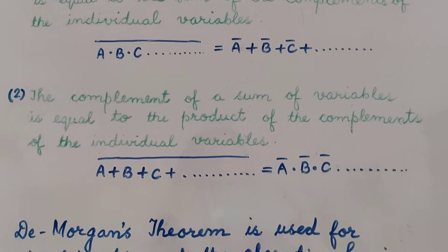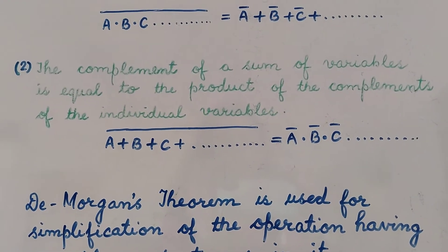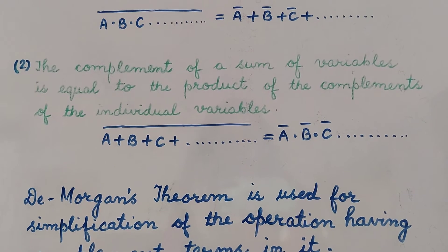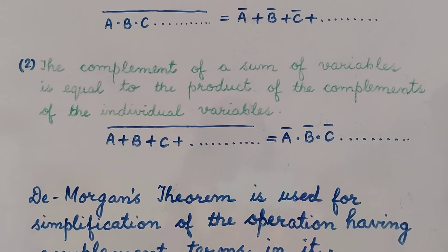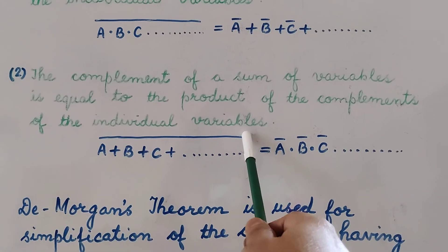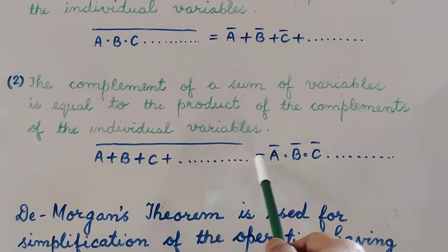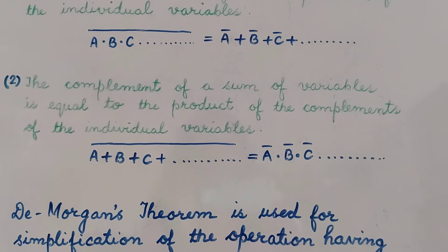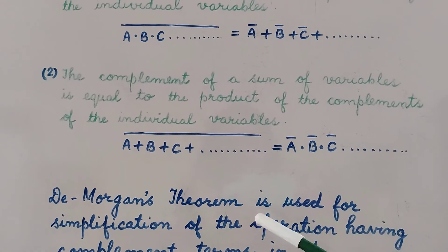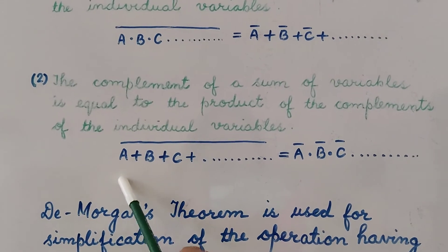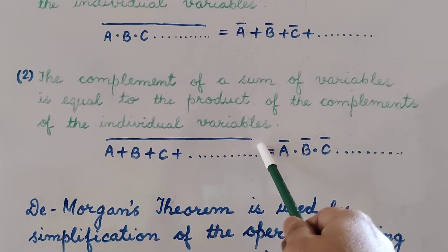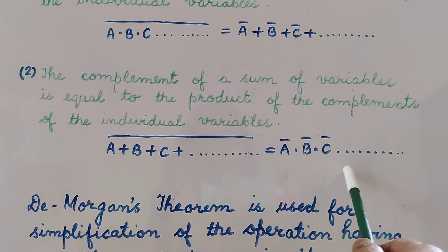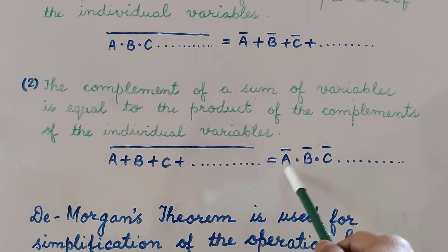The second theorem states that the complement of a sum of variables is equal to the product of the complements of the individual variables. Mathematically, the complement of the sum of the variables will be equal to the product of the complement of the individual variables. This is the second De Morgan's theorem.